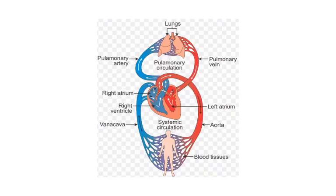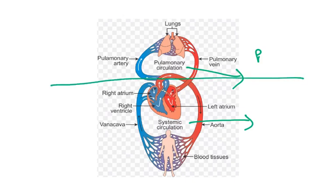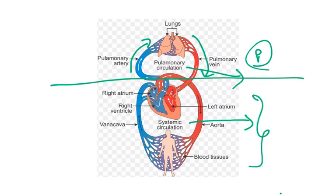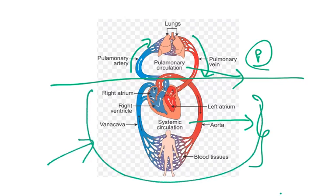We often hear about pulmonary circulation and systemic circulation. Whatever blood is carried to the lungs and coming out of the lungs is known as pulmonary circulation — pulmonary artery carries blood to the lungs where oxygenation occurs, and pulmonary vein takes blood from the lungs to the heart. The rest is known as systemic circulation. In pharmacology, when we say a drug gets into systemic circulation, that means it is not getting into lungs or pulmonary circulation.